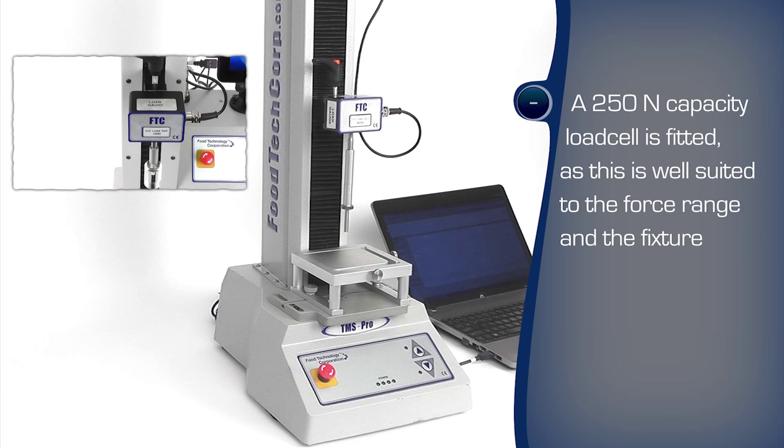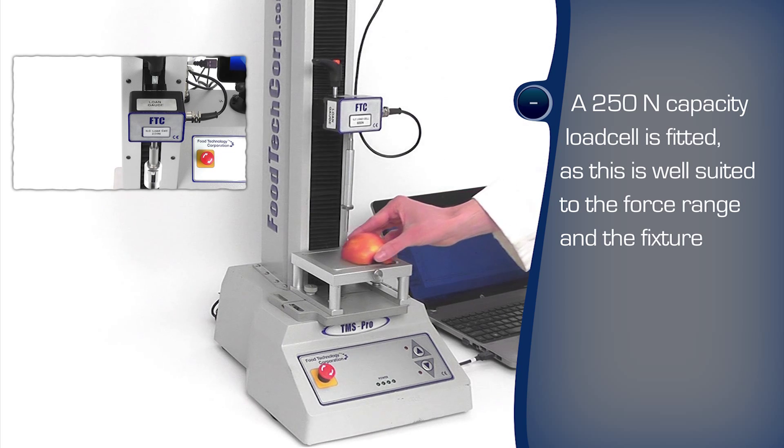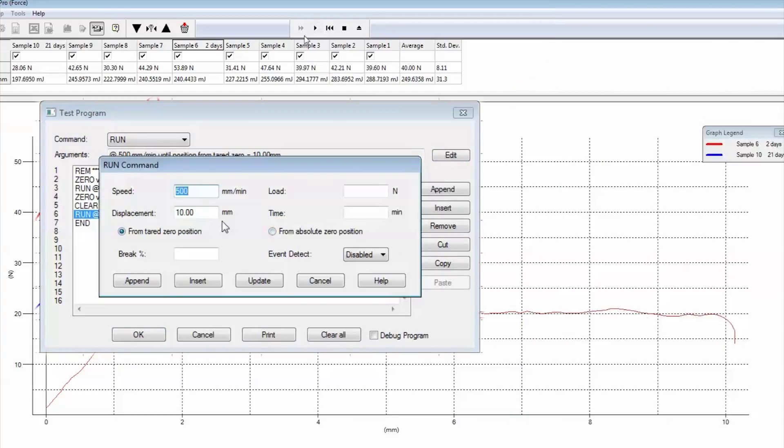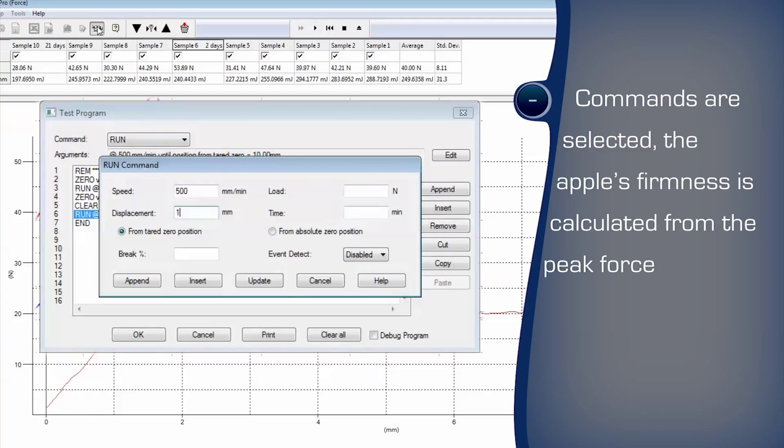A suitably rated load cell is used to maximize the measurement accuracy. The automated test program is easily written with the familiar Windows-based environment. The commands are selected to perform the steps. The apple's firmness is calculated from the peak force.